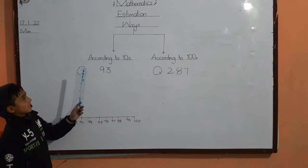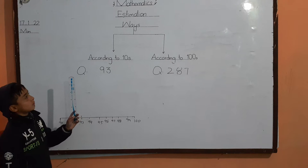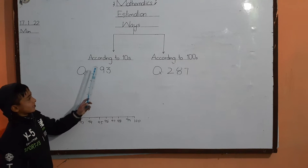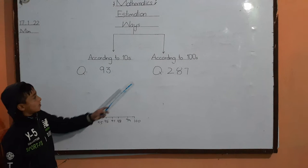Estimation means andadharagana. There are two ways of rounding up: according to tens, according to hundreds.